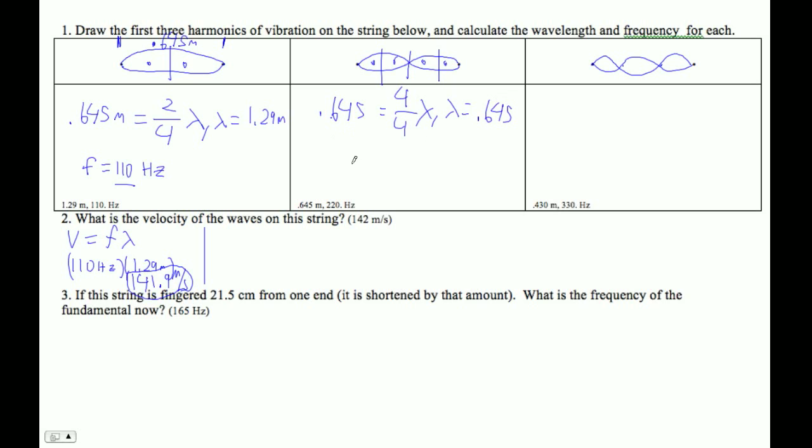So now the question is what's the frequency? You can either remember that in both ends fixed it goes one times, two times, three times, so we know it's going to be 110, 220, 330. Or we can pretend we don't know and use V equals F lambda. So 141.9 is our wave speed, equals some frequency times 0.645. Now I can just divide: 141.9 divided by 0.645 is 220. So frequency equals 220 hertz.